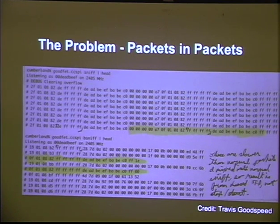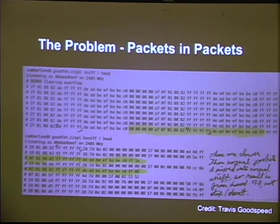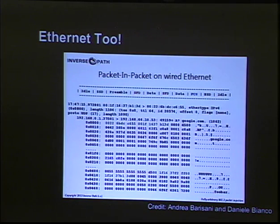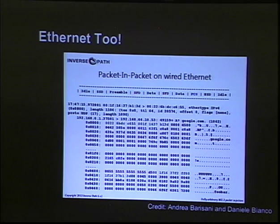It picks out his inner packet, highlighted with tags. Credits to Travis for this — I very much recommend you go find a video of it; he's given this presentation in a number of different places. This year, Andrea and Danielle from Inverse Path managed to get the same thing working on wired ethernet — when they unplugged and then re-plugged in the cable, they were able to glitch the system.